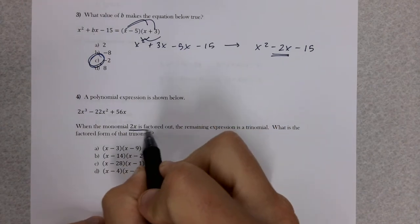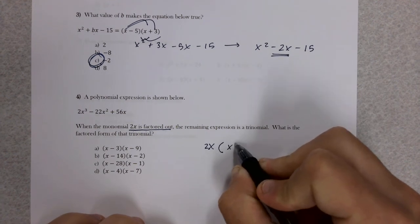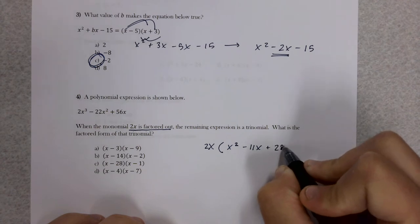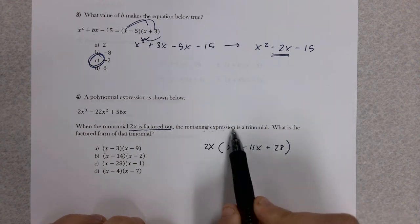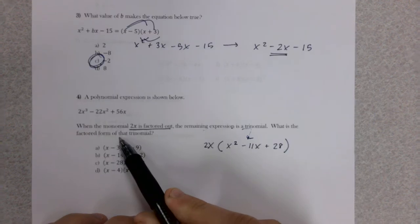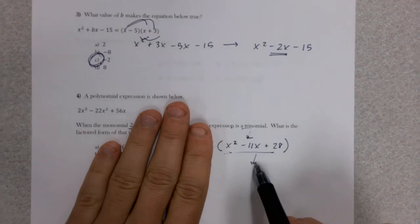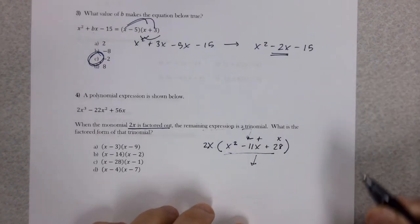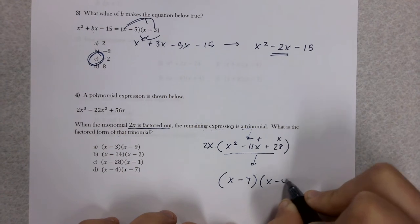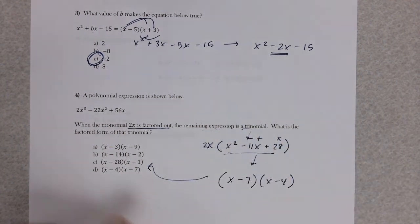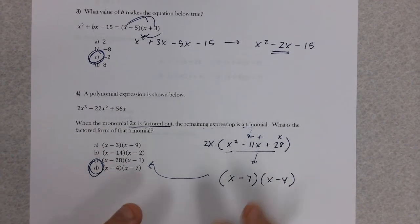Number four, a little bit harder. They tell you that they factored a GCF out first, so I would recommend you do the same thing. Factor that GCF out and it leaves me with x squared minus 11x plus 28. Factor the remaining expression as a trinomial. What multiplies to give you 28 and adds to give you negative 11? That would be negative 7 and negative 4.